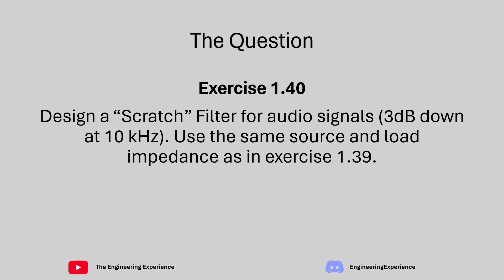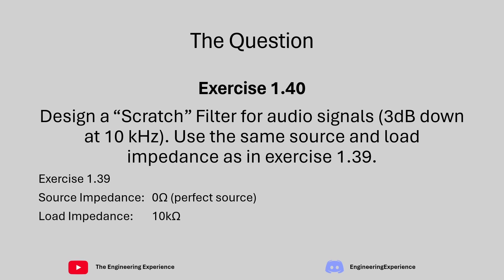We're using the same source and load impedance that was described in exercise 1.39. To recall, exercise 1.39 set the source impedance at 0 ohms, which is basically telling us that it is a perfect source. And the load impedance was 10 kOhms, which is the resistor connected to the output of the RC filter.